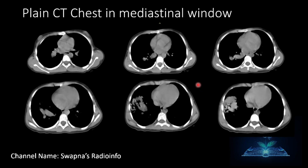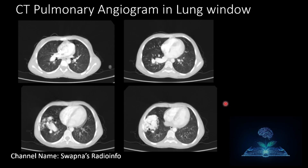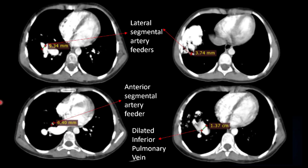CT pulmonary angiogram was then carried out. On plain CT chest in the mediastinal window, it shows heterogeneous soft tissue opacity in the right lower lobe. In the CT pulmonary angiogram lung window, you can see the lesion very clearly in the right lower lobe. On post-contrast imaging, you can see the intensely enhancing vascular nidus.